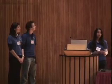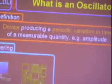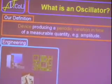So let's simply agree on what an oscillator actually is. We defined it to be a device that produces a periodic variation in time and corporeal space of a measurable quantity such as amplitude. Now oscillators are already a fundamental building block in traditional engineering applications, such as the clock, the computer, or the electronic circuit.